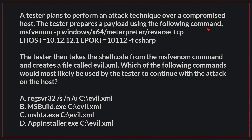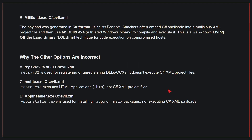A tester plans to perform an attack technique over a compromised host. The tester prepares a payload using an MSFvenom command, then takes the shellcode and creates a file called evo.xml. Which of the following commands will most likely be used by the tester to continue the attack on the host? The correct answer is B. The payload was generated in C# format using MSFvenom. Attackers often embed C# shellcode into a malicious XML project file and then use msbuild.exe to compile and execute it. This is a well-known LOLbins technique for code execution on compromised hosts.